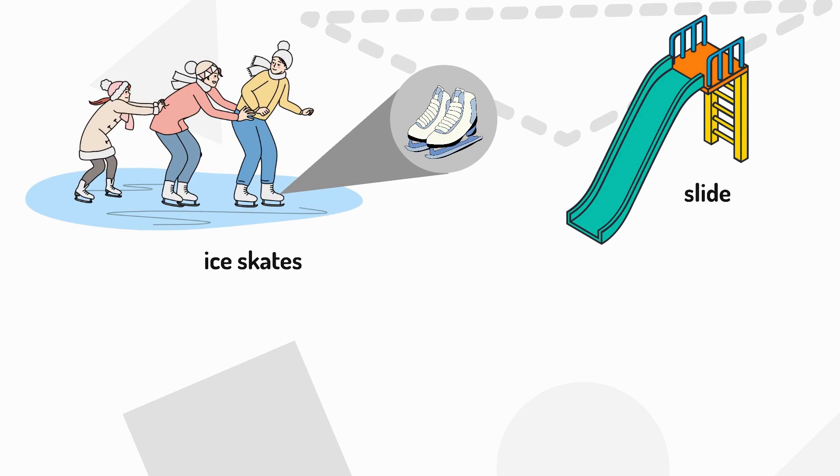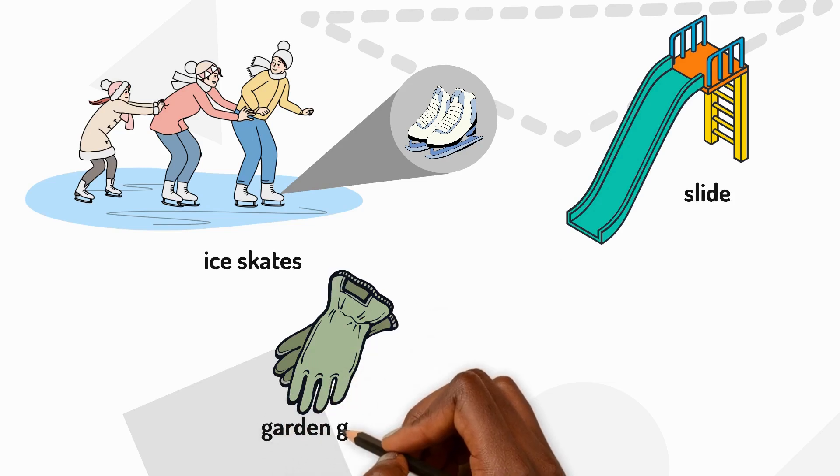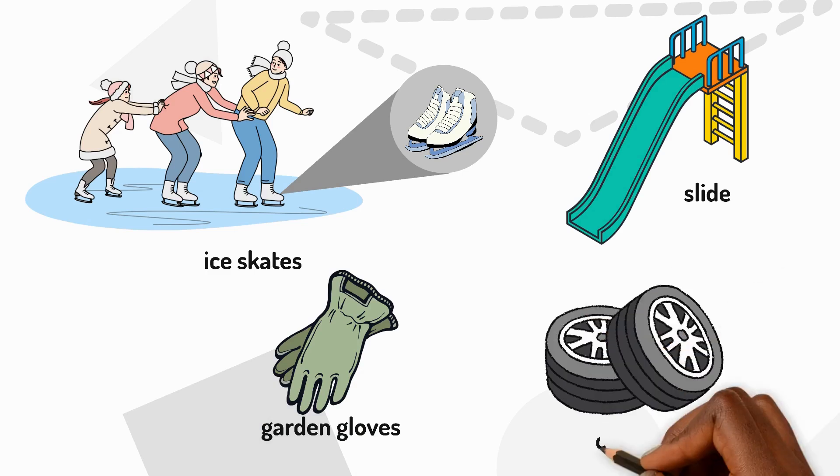We can make more friction by making surfaces rougher. Like adding rough bits to garden gloves so that tools don't slip out of our hands. Or making car tires made out of rough rubber so that cars don't slip on the road.